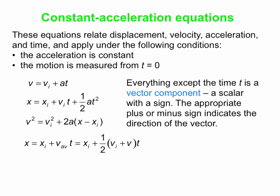Let's start talking about some equations we're going to use — we'll make use of these a lot. These equations relate displacements, positions, velocities, accelerations, and times. They apply under the following conditions: first, when the acceleration is constant; and second, we assume that we start at t equals zero. So the x's, v's, and a's in the equations are all components of vectors — basically scalars with a sign — and the sign tells us about the direction of the velocity, acceleration, or position with respect to some origin.